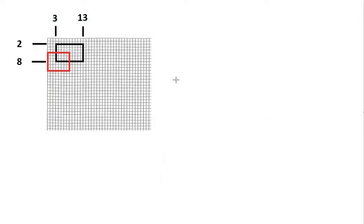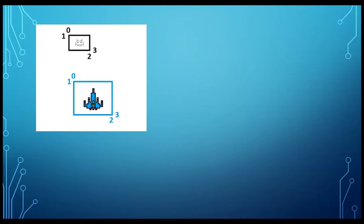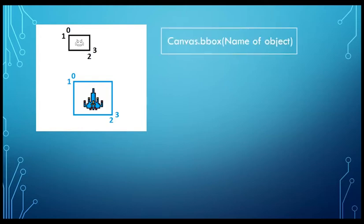Let's see how we do that in Visual Studio. How do we create collision detection with B-Box? Here is our object — we've got an alien on top in black and a ship on the bottom in blue. The X coordinates are 0 and 2, and the Y coordinates are 1 and 3. The syntax is: canvas dot B-Box, open brackets, then the name of the object. That gives us the information which we can put inside a variable.